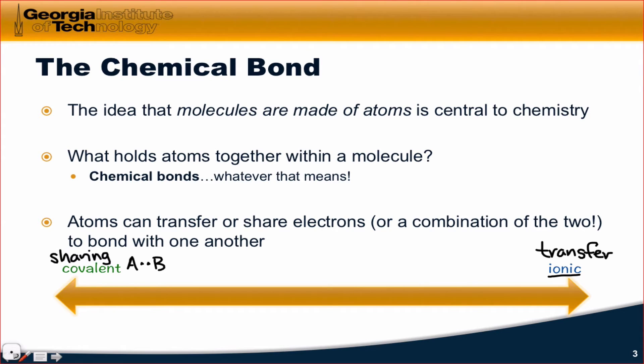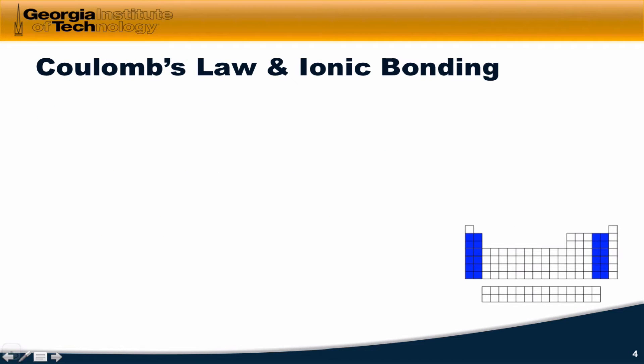There's a somewhat murky line between sharing and transfer, right? And so we think of chemical bonding along a continuum. A bond might be more or less ionic. A bond might be mostly covalent with a little bit of what's called ionic character. We can find bonds in a variety of molecules that sit at a variety of places along this continuum.